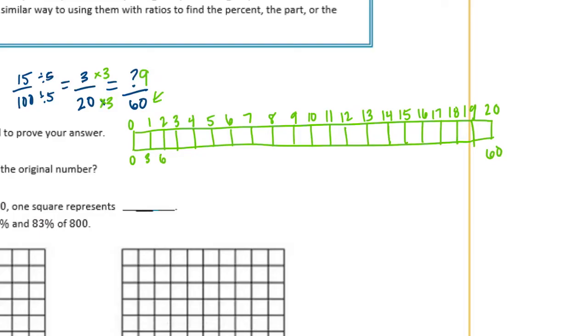So 3, 6, 9, 12, 15, 18, 21, 24, 27, 30, 33, 36, 39, 42, 45, 48, 51, 54, 57, and 60. And what we're looking for is 3 out of 20, and that is equal to 9.